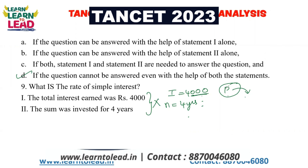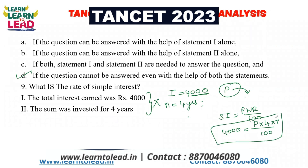Simple interest is equal to P×N×R divided by 100. Interest is equal to 4000, which equals principal into N — that is 4 — into R by 100. There is a linear equation with one value and two unknowns. You cannot solve this with one statement alone. The question cannot be answered even with the help of both statements. So the answer is option B.